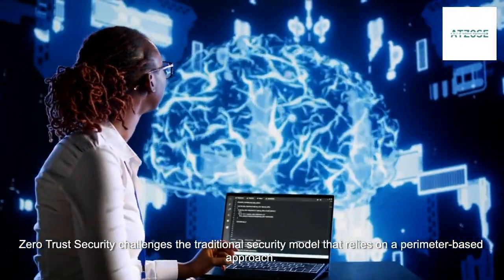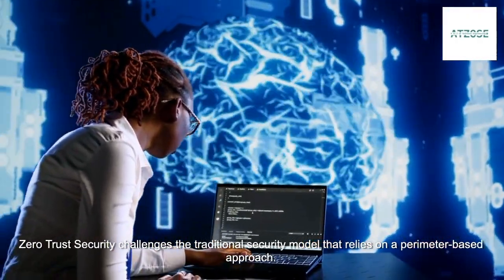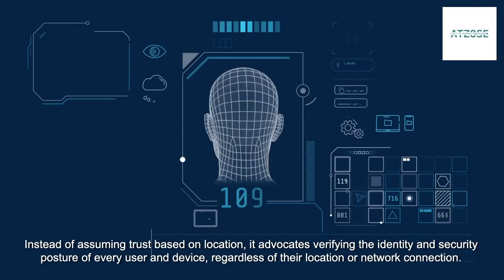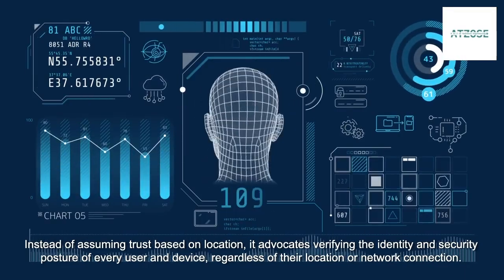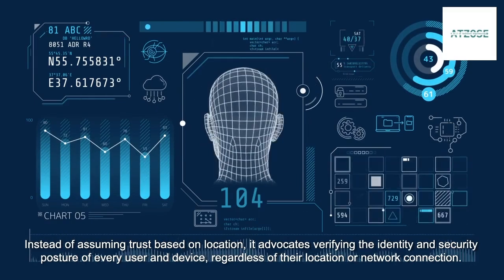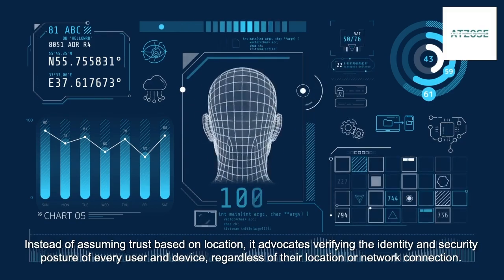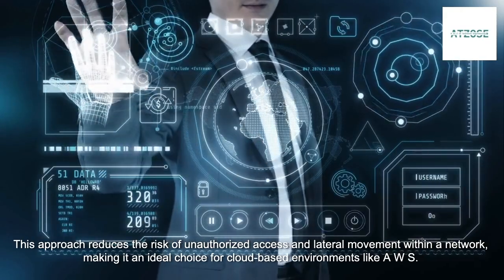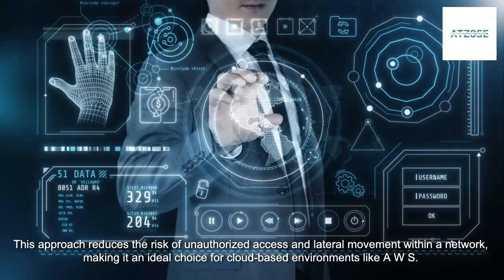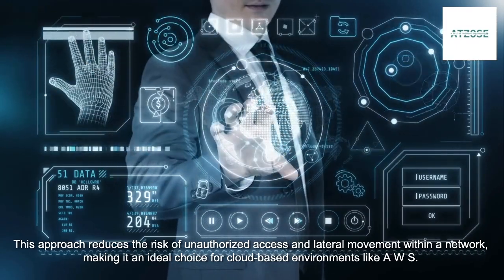Zero Trust Security challenges the traditional security model that relies on a perimeter-based approach. Instead of assuming trust based on location, it advocates verifying the identity and security posture of every user and device, regardless of their location or network connection. This approach reduces the risk of unauthorized access and lateral movement within a network, making it an ideal choice for cloud-based environments like AWS.